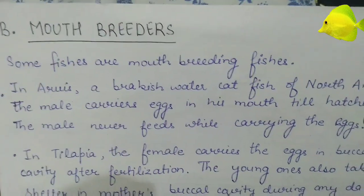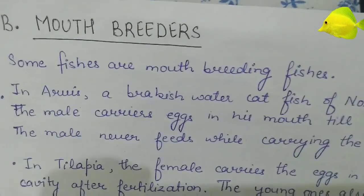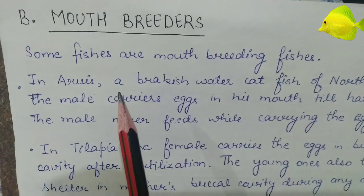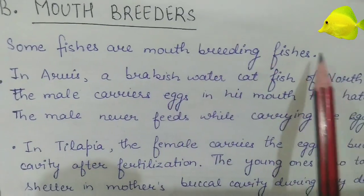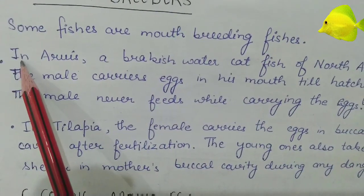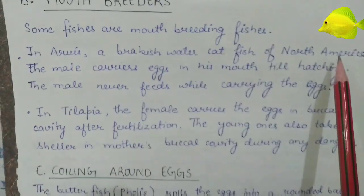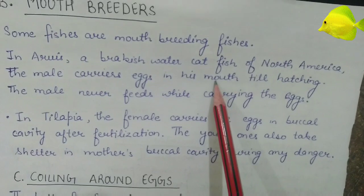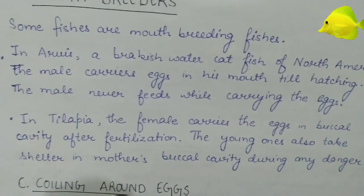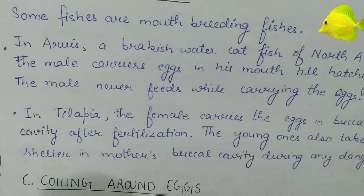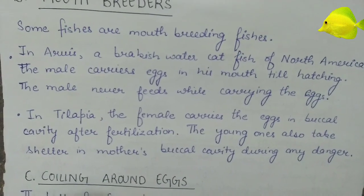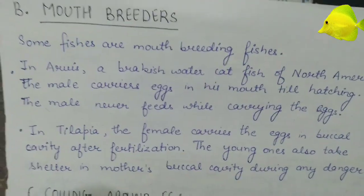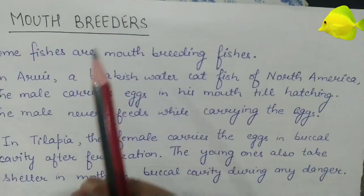The second way of parental care in fishes is mouth breeding. In some fishes they are said to be mouth breeding fishes. For example, in Aroes, which is a brackish water catfish of North America, the male carries eggs in his mouth till hatching, and the male never feeds while carrying the eggs.